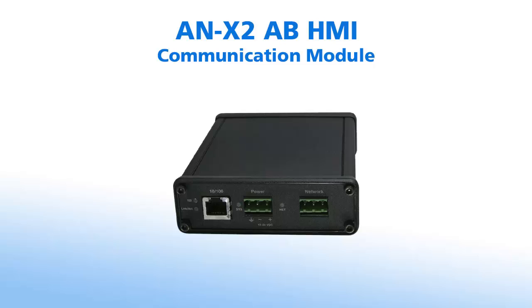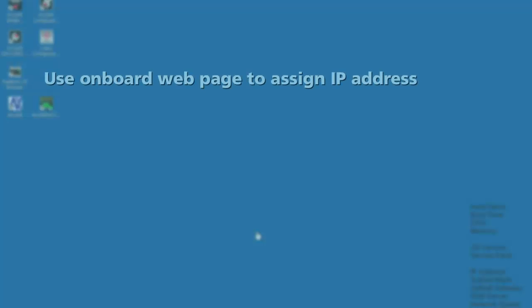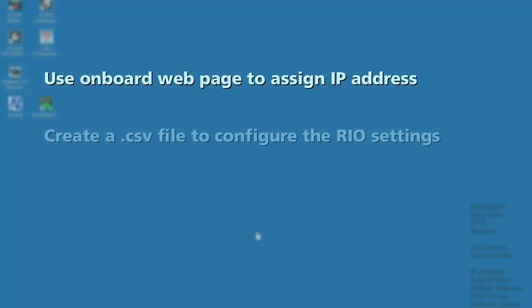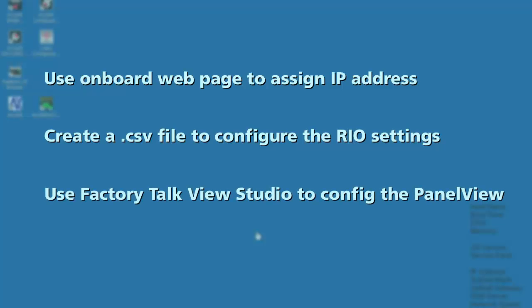The ANX2 HMI allows users to upgrade their existing remote I/O panels to PanelView Plus 6 on Ethernet IP. In this video, we'll use the ANX2's onboard web page to assign an IP address, go through the steps to use the module's link-local IP address, create a CSV file to configure the RIO settings in the module, and use FactoryTalk View Studio to configure the PanelView.